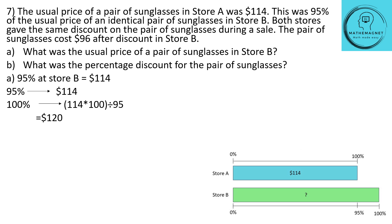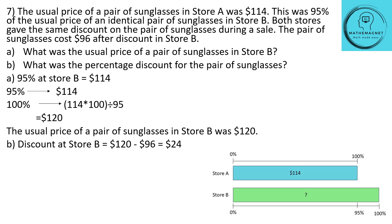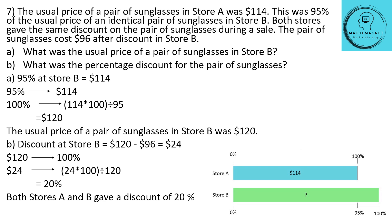Now, what was the percentage discount? The usual price at store B was $120, and after discount the sunglasses cost $96. So the discount at store B was 120 − 96 = $24. For $120 being 100%, $24 will be 24 × 100 ÷ 120, which equals 20%. So both stores gave a discount of 20%.